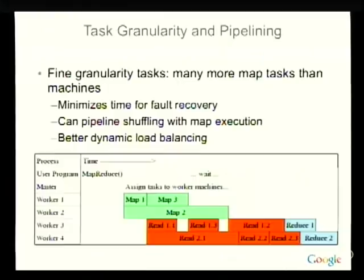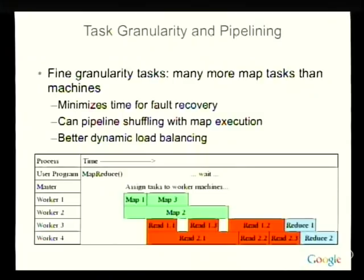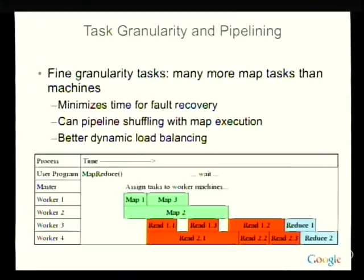You want pretty fine-granularity tasks — rather than each worker doing just one map task, you'd rather have them do 10 or 20, so when a machine fails you can recover very fast by redistributing those tasks to other machines. This also allows pipelining the network transfer: as soon as a map task finishes, the workers assigned to reduce work can start reading that map output from across the network, so you're shuffling in parallel with running other map computations. You get better dynamic load balancing with finer-granularity tasks.